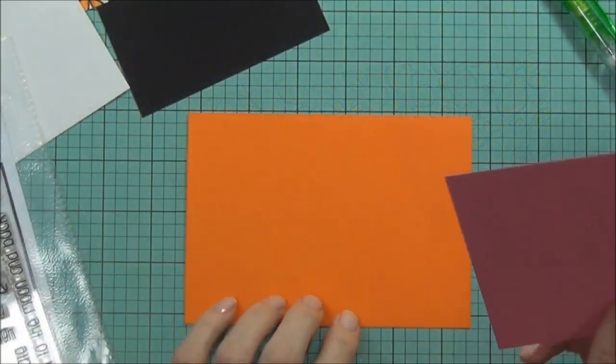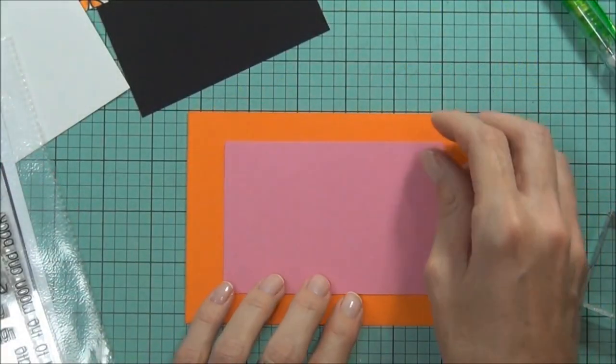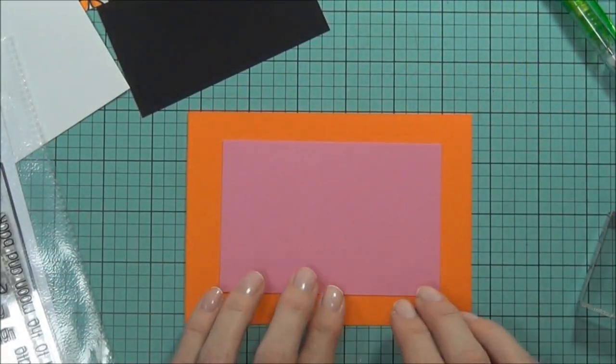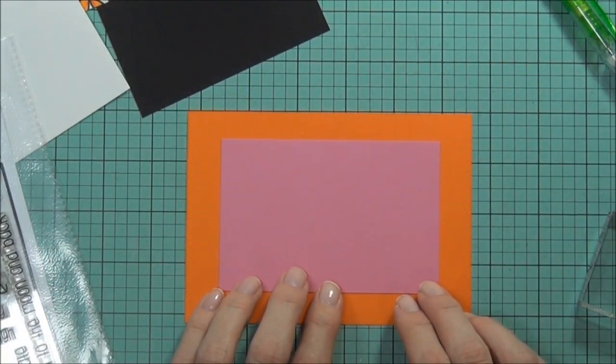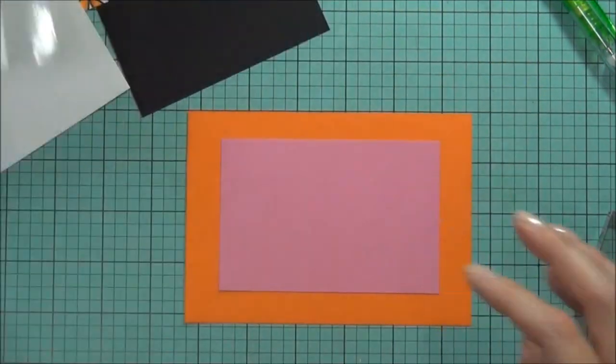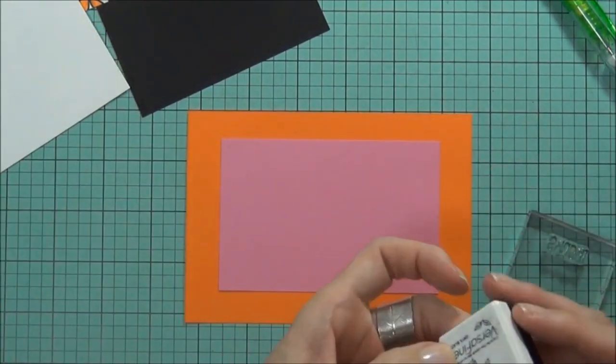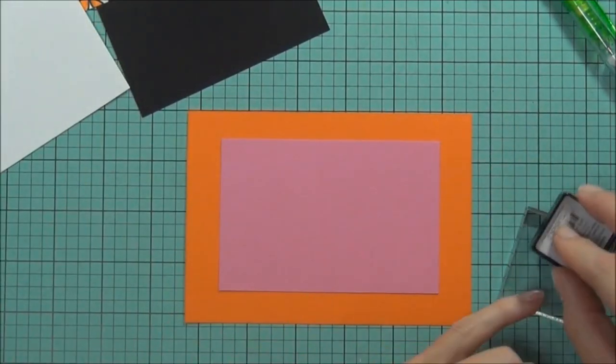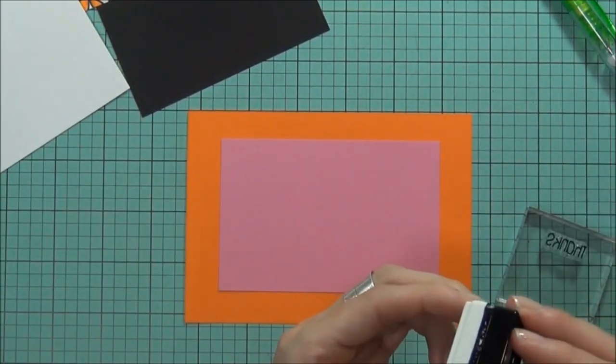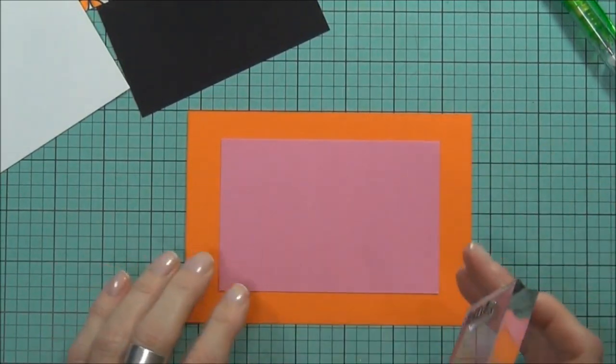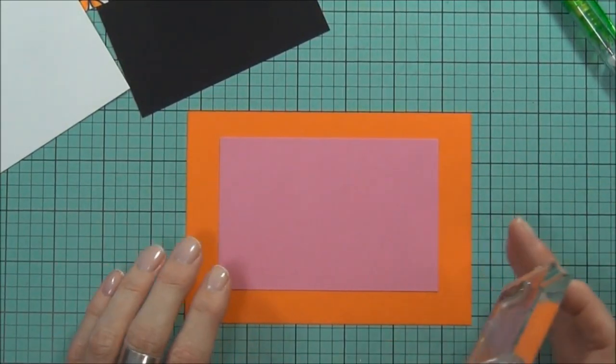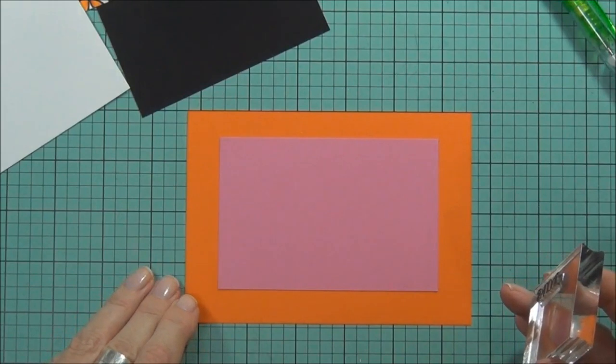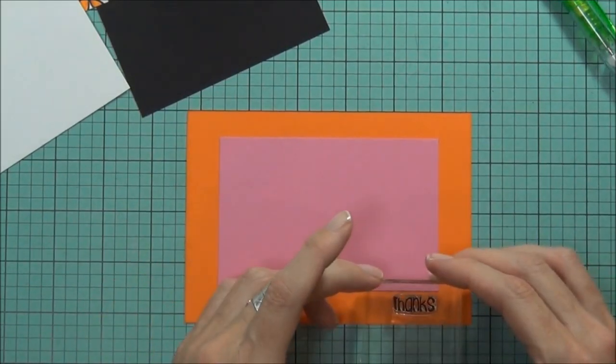I've got some orange cardstock and some pink cardstock cut ready to go. I'm going to use the sentiment 'Thanks' from More Than Words and I've got some VersaFine Onyx Black Ink. I'll stamp that out just in the lower corner here.